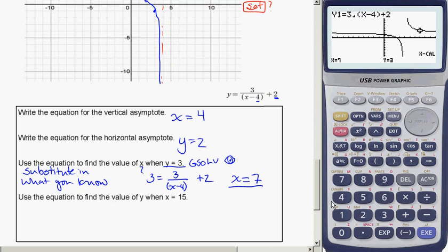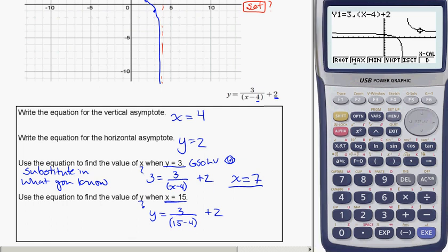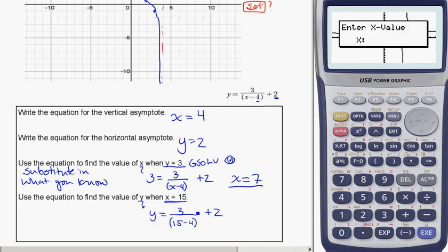For the next bit, they ask us to use the equation to find the value of y when x is equal to 15. Here we want to know y and x is equal to 15. Substitute in. So y is equal to 3 divided by, now x is 15, minus 4, plus 2. You can just type that directly into your calculator, or if you want to be using gsolve, go ahead and go back and find ycalc, because I'm trying to calculate y when x is equal to 15.